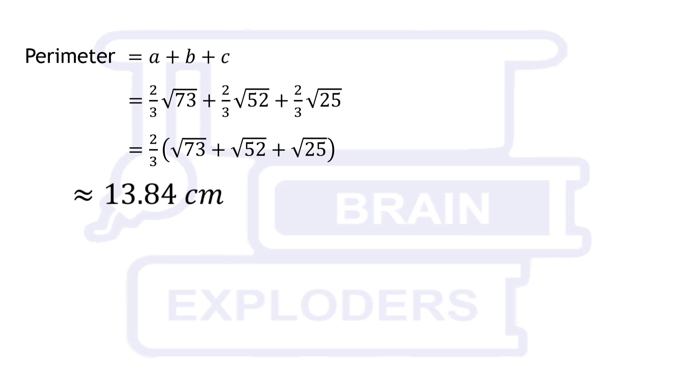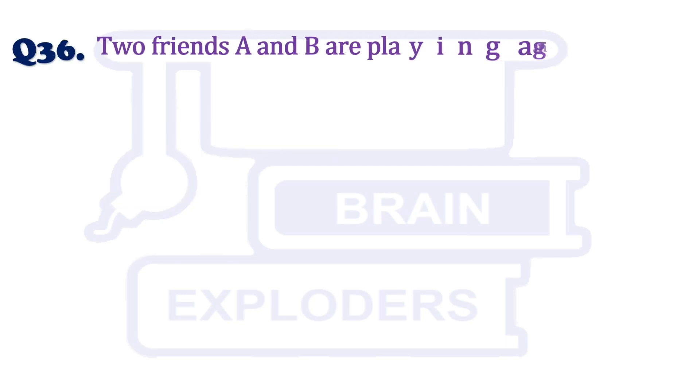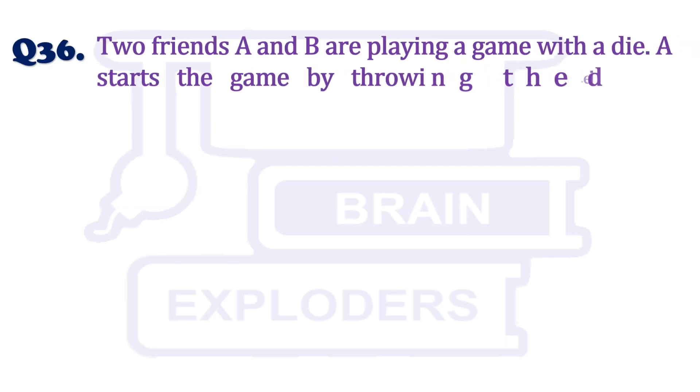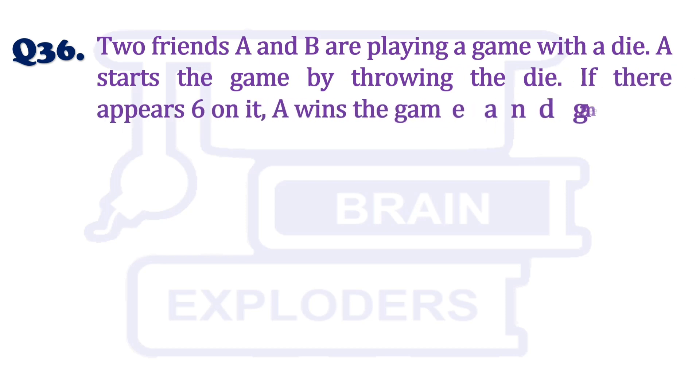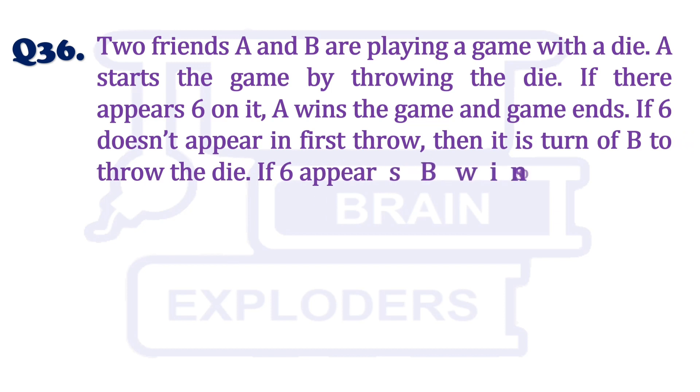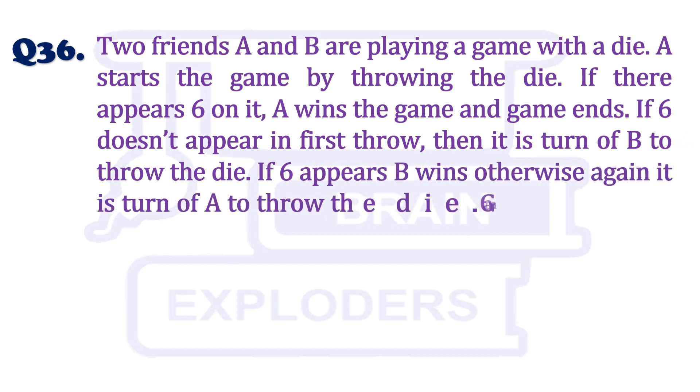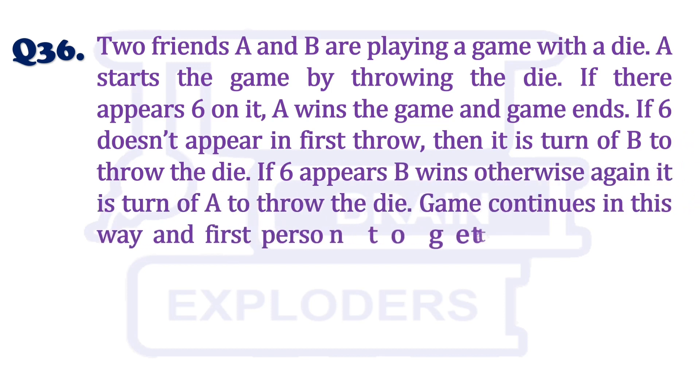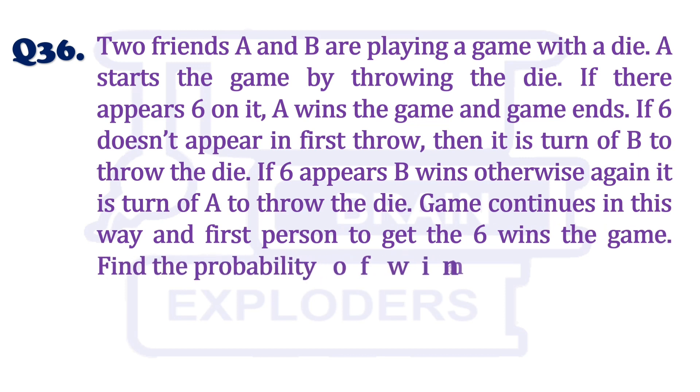Let's move to our another question. Two friends A and B are playing a game with a die. A starts the game by throwing the die. If there appears 6 on it, A wins the game and game ends. If 6 doesn't appear in first throw, then it is turn of B to throw the die.